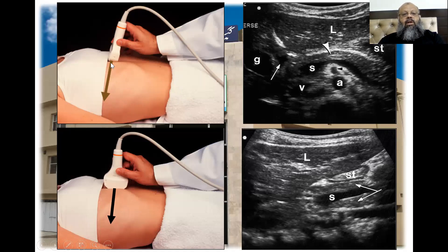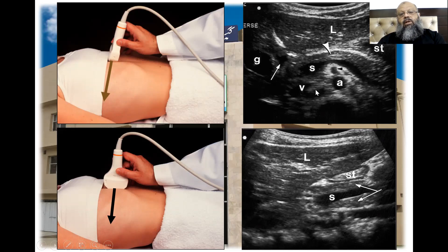Then we rotate it upward for longitudinal scanning. While putting the transducer transversely, we will get the longitudinal — that is the sagittal view — of the pancreas. We can identify the splenic vein, the superior mesenteric artery, the aorta, and the IVC. Here is the stomach with the lesser sac, and we have the liver and gallbladder.